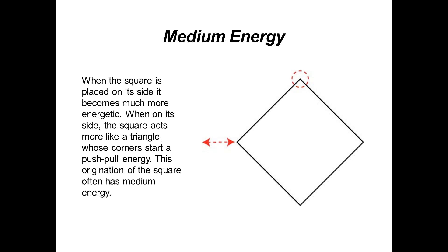One of the reasons the tilted square is not quite as energetic as a triangle is because of the rule of odds — there are four corners in a square opposed to three corners in a triangle.